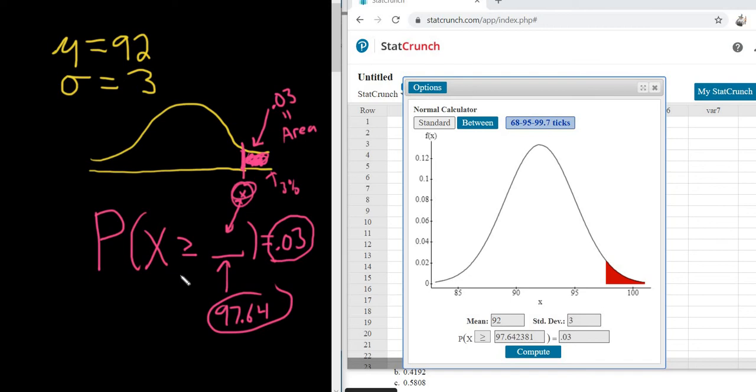So the probability that x is bigger than this is 0.03. So this is the number that separates the top 3% from everything else. So this number here, this x value, is 97.64. There's a really easy way to do this always.